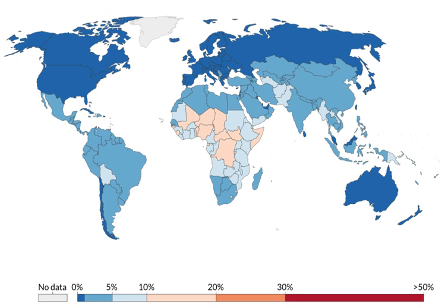Child mortality isn't only caused by infection and disorder; it is also caused by premature birth, birth defects, newborn infection, birth complications, and diseases like malaria, sepsis, and diarrhea. In less developed countries, malnutrition is the main source of child mortality. Pneumonia, diarrhea, and malaria together are the cause of one out of every three child deaths before the age of five, and nearly half of under-five deaths globally are attributable to undernutrition.